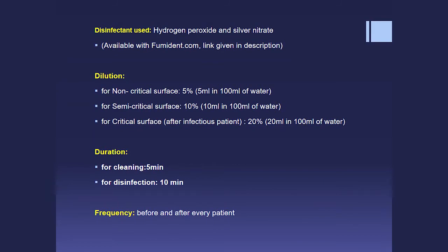The second step is disinfection following CDC guidelines. You can use a hydrogen peroxide and silver nitrate combination: 5% concentration for non-critical areas, 10% for semi-critical areas, and 20% for critical areas. Spray the disinfectant on the clinical contact area and keep it for the contact time recommended by the manufacturer for that product.